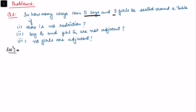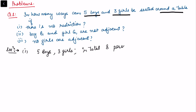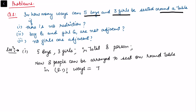Now consider problems based on circular permutation. In how many ways can 5 boys and 3 girls be seated around a table if there is no restriction? In the first case with no restriction, there are 5 boys and 3 girls, giving 8 people total. By the formula, 8 people can be arranged around a round table in 8 minus 1 factorial, that is 7 factorial ways.